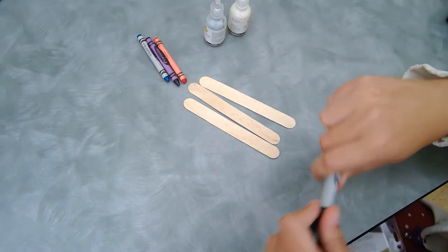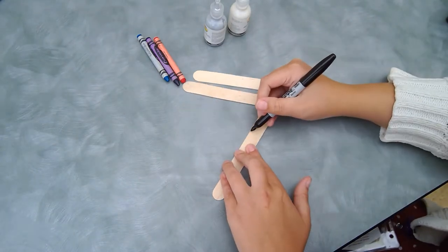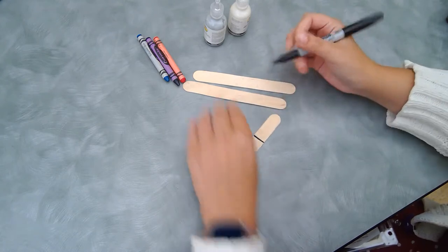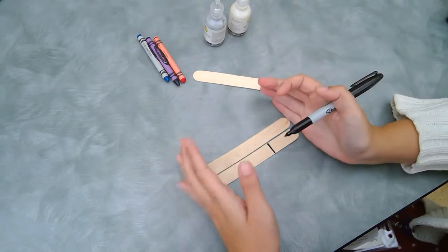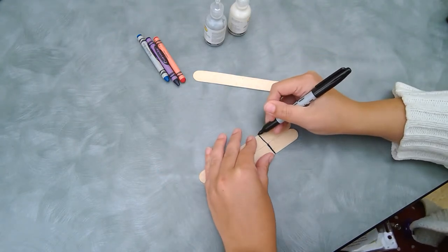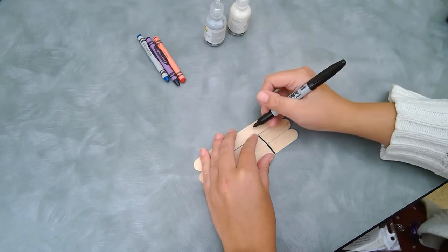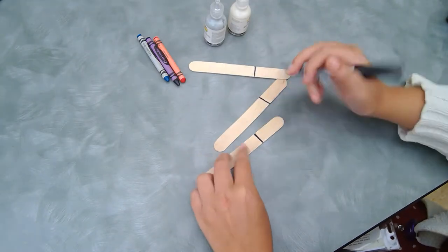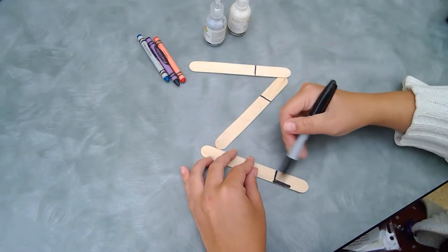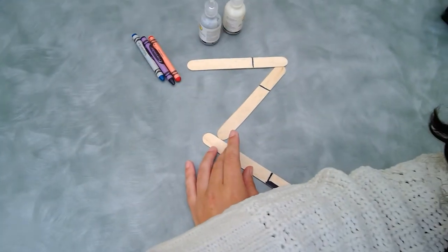The first thing we're gonna do is kind of mark off where the handles of our lightsabers should begin. I'm just gonna do it like this. And then we're gonna very carefully color them all in.